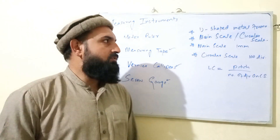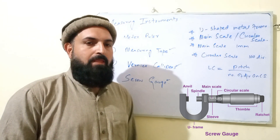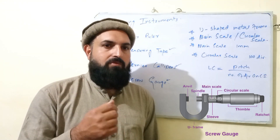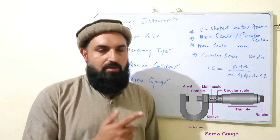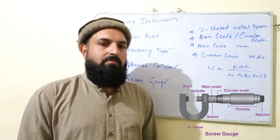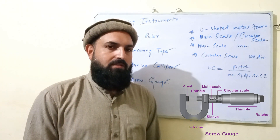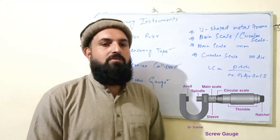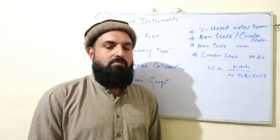This is a U-shaped metallic frame structure — the micrometer screw gauge. There are two scales: the main scale and the circular scale. The circular scale is movable. When we rotate the thimble, we adjust the spindle to measure the object. We place the object and read the main scale — the divisions are in millimeters.